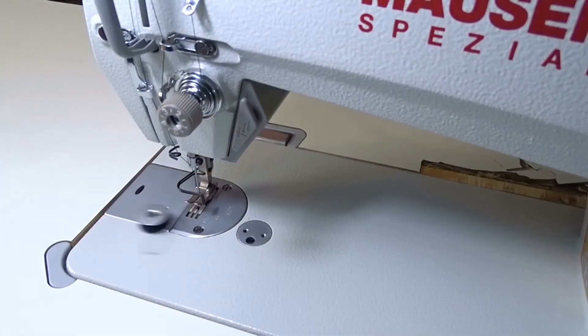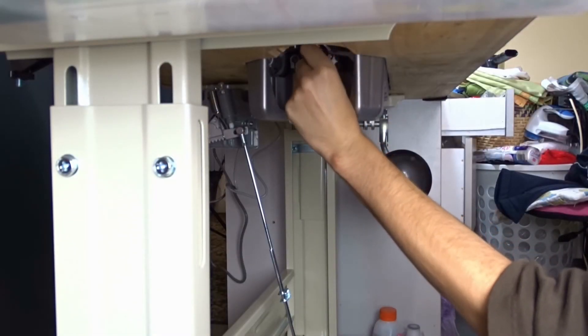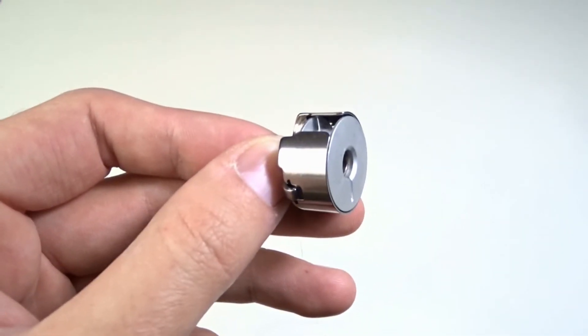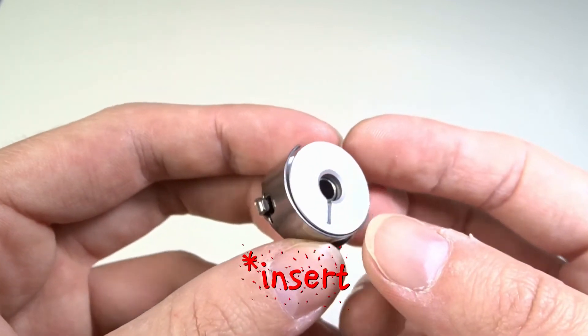Now let's insert the bobbin. The process is the same as with domestic sewing machines. Take out the bobbin case, remove the empty bobbin and take the full one.